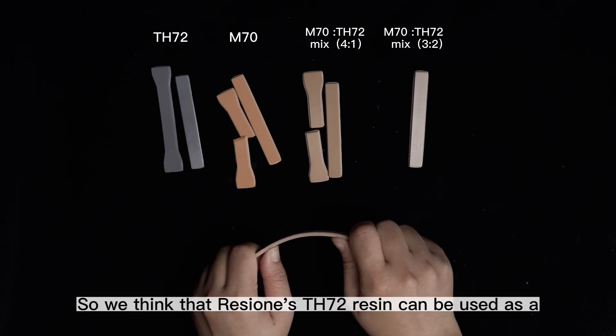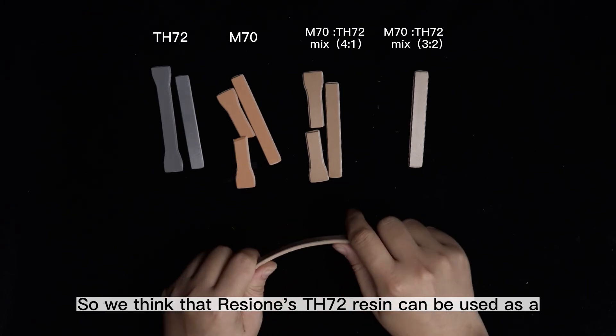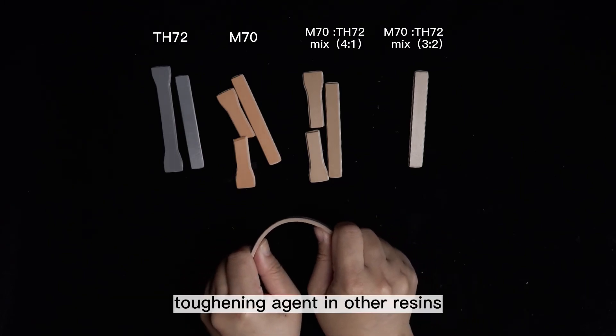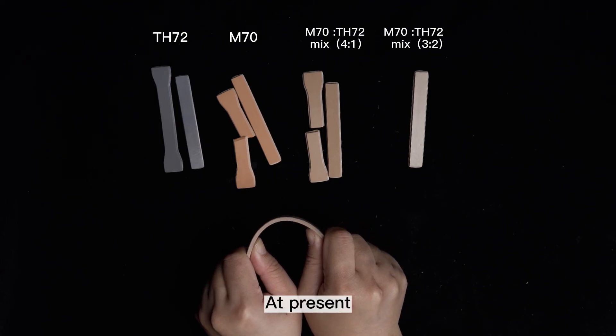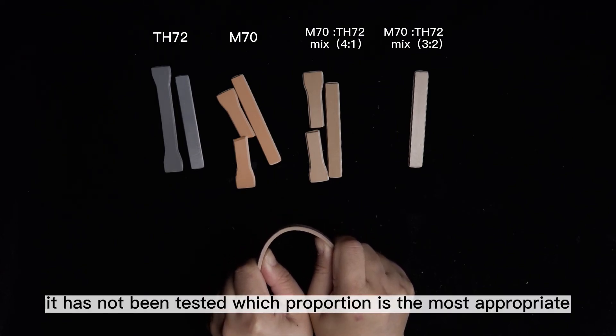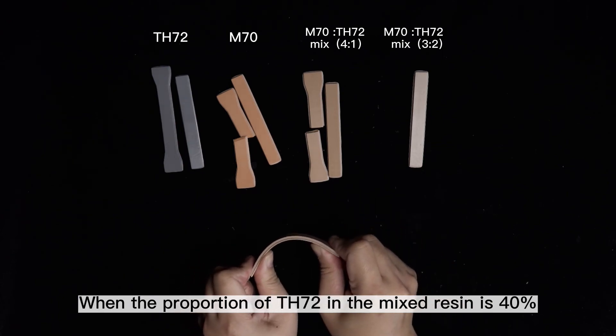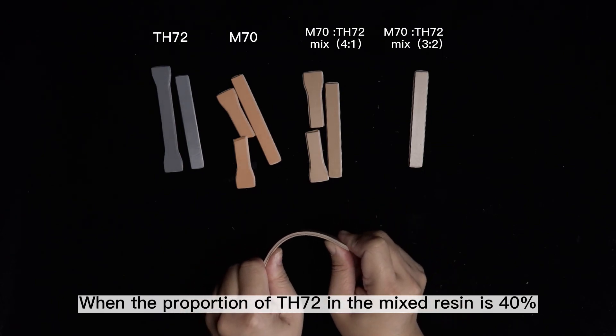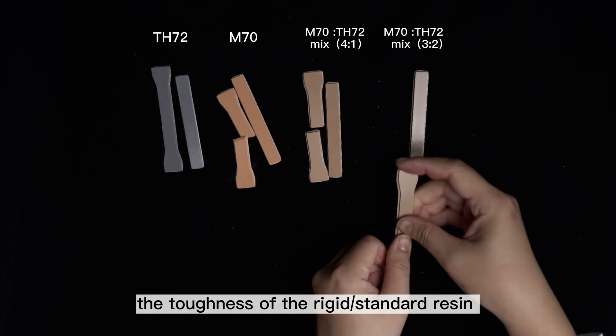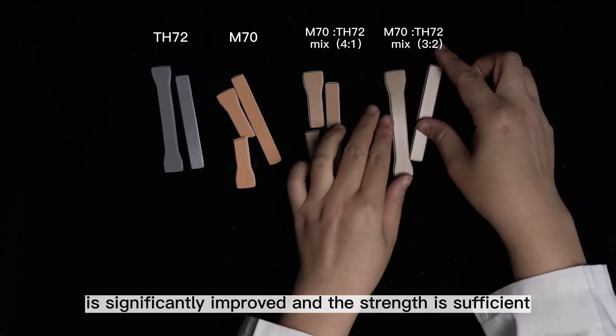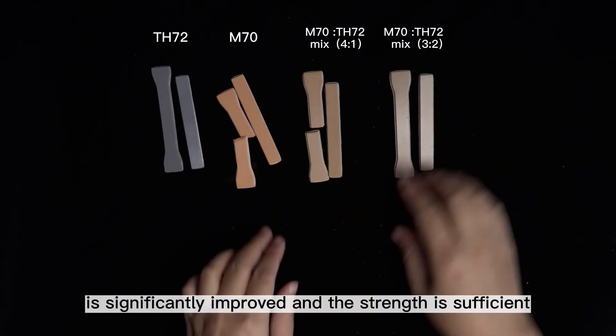So we think that ResiOne's TH72 resin can be used as a toughening agent in other resins. At present, it has not been tested which proportion is the most appropriate. When the proportion of TH72 in the mix resin is 40%, the toughness of the rigid or standard resin is significantly improved when the strength is sufficient.